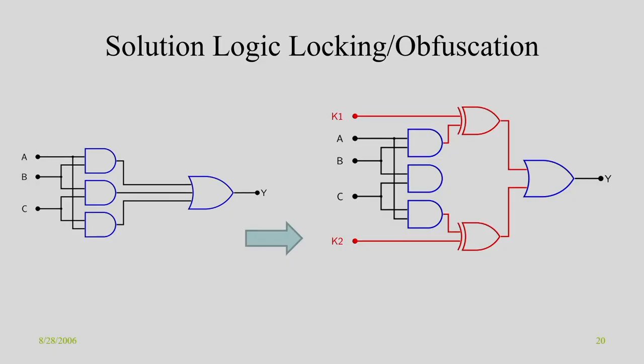If your key size is say 100, then there are 2 to the power 100 possible keys and it will work for only one possible value. Checking this locked circuit for 2 to the power 100 is impossible. As a result, unless the key is available to you, you cannot use this circuit. So even if you do reverse engineering and get the netlist and produce many IPs, it would not work in practice because that particular IC does not have the correct key value.